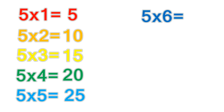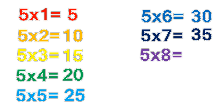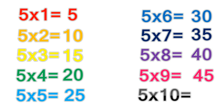5 times table. 5 times 5 equals 25. 5 times 6 equals 30. 5 times 7 equals 35. 5 times 8 equals 40. 5 times 9 equals 45. 5 times 10 equals 50.